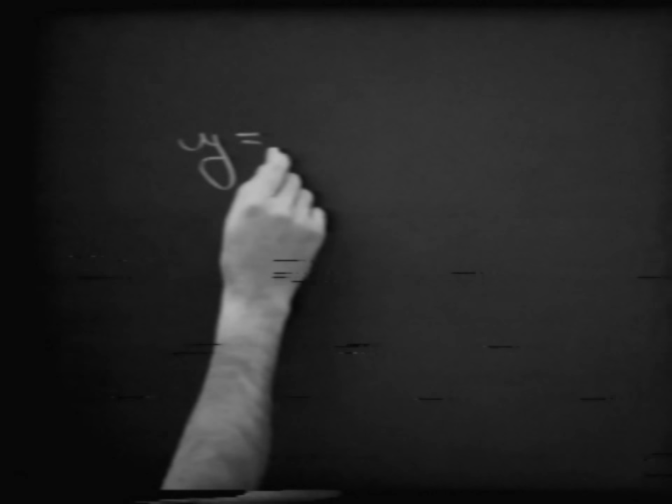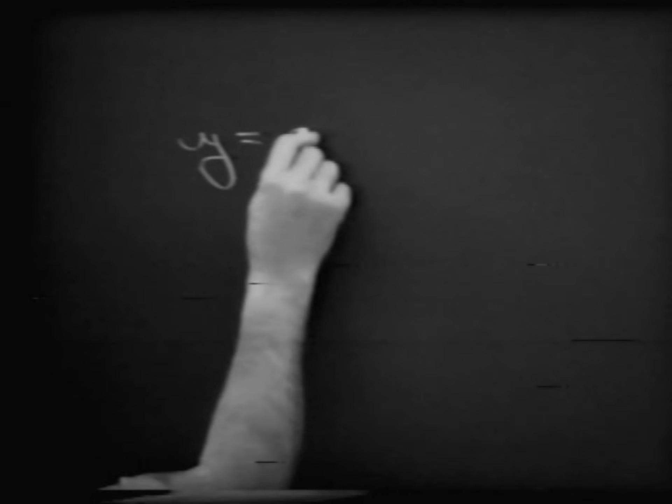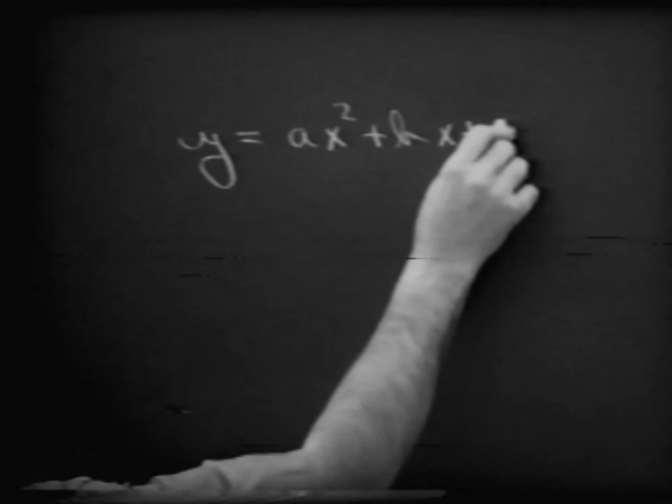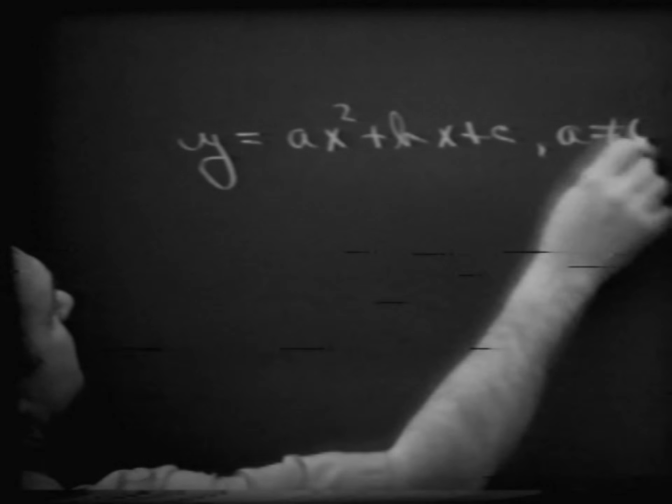Good morning, boys and girls. What we'd like to do in today's lesson is to take our general quadratic formula for the function y is equal to ax squared plus dx plus c, where a is not equal to zero. And what we'd like to do is to translate it into the pattern we had in yesterday's lesson so that we can go ahead and make its graph very easily.